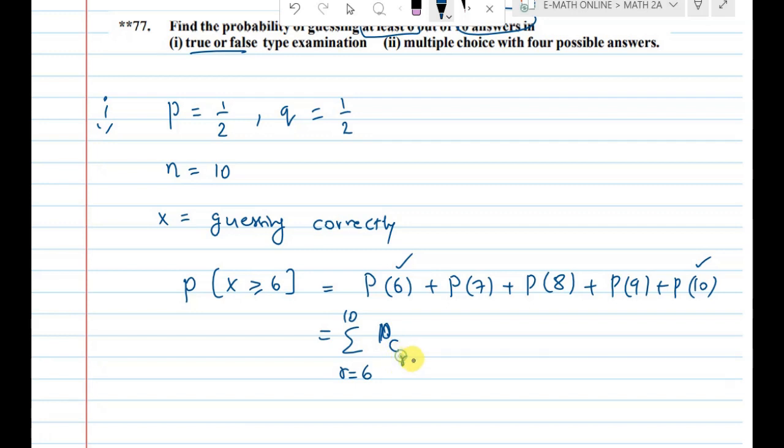In how many questions? 10 questions. So it's 10Cr, q power 10 minus r into p power r.